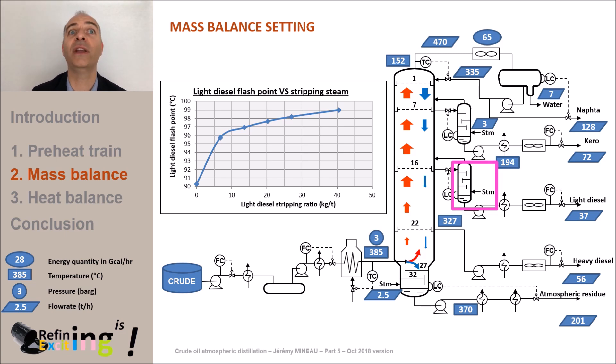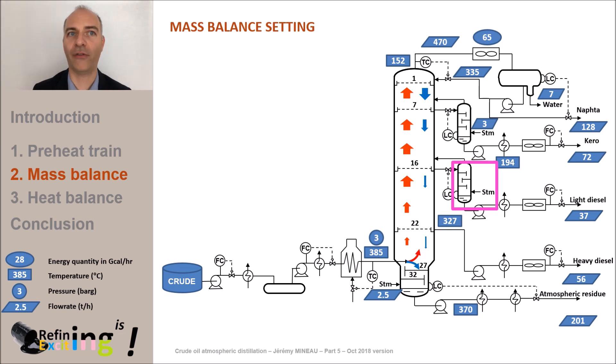Thus, when considering a stripping ratio of 27 kilograms of stripping steam per ton of light diesel, we see that we have an increase in the flashpoint of about 8 degrees C. Moreover, as we just said before, stripping the light diesel cut also improves the freezing point of kerosene.